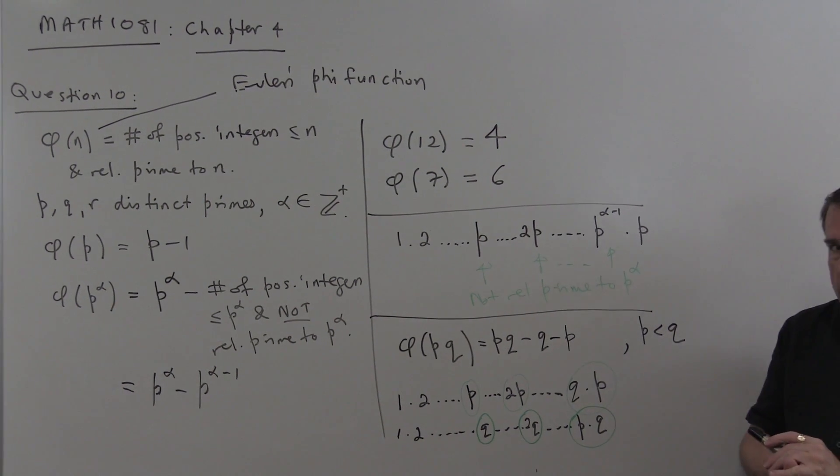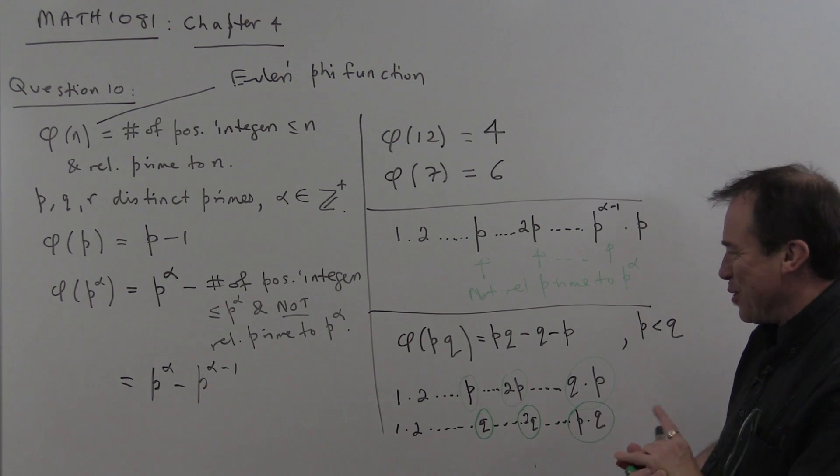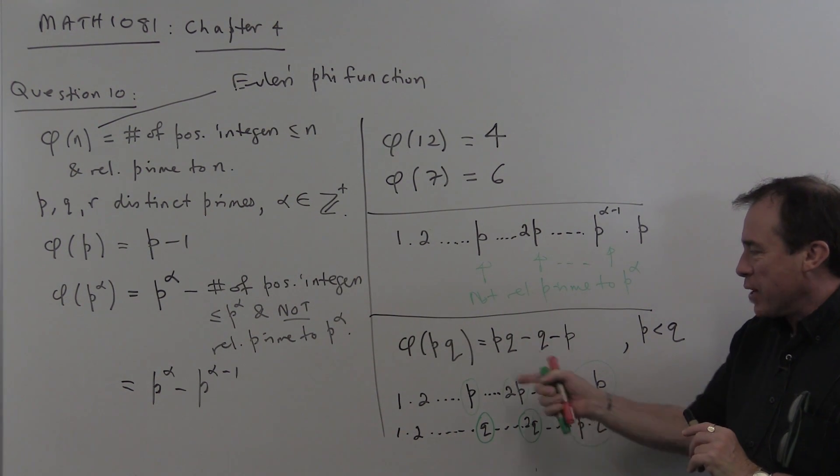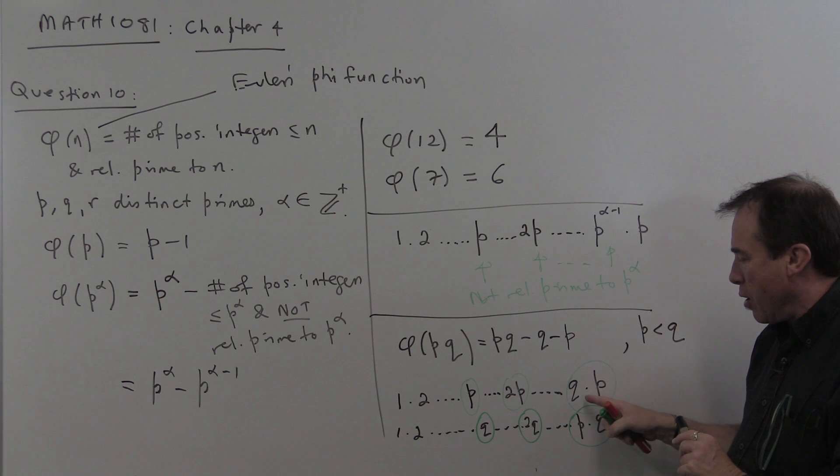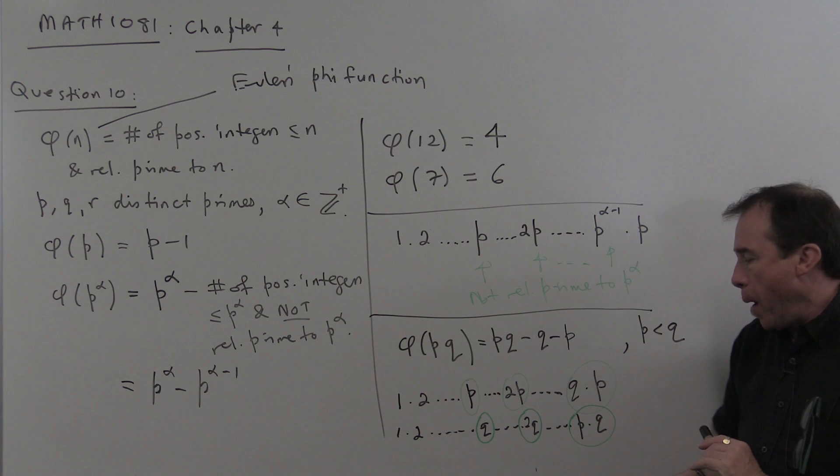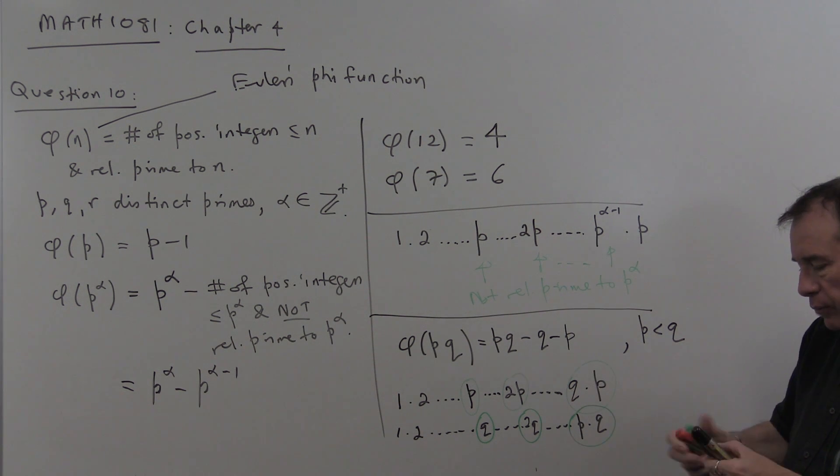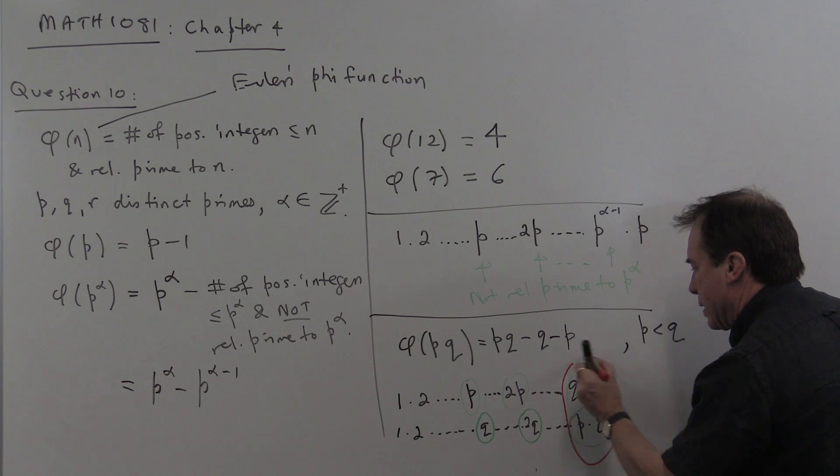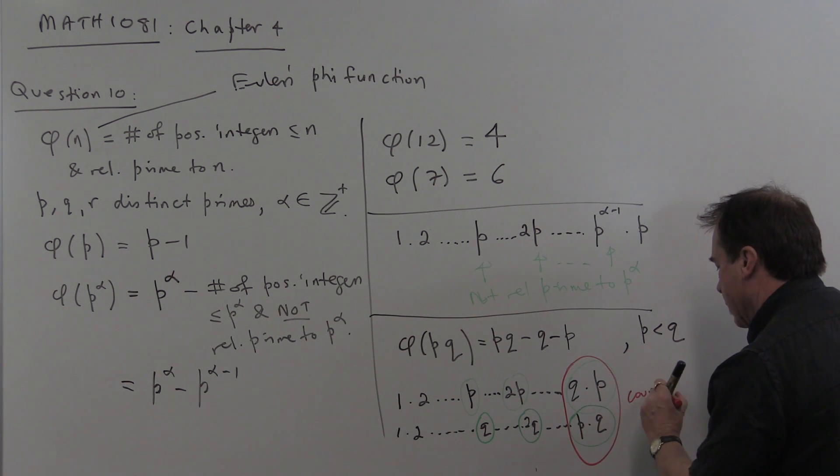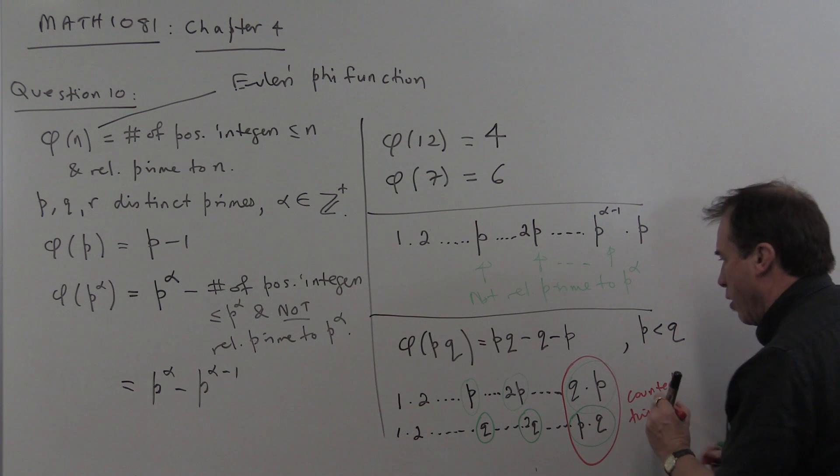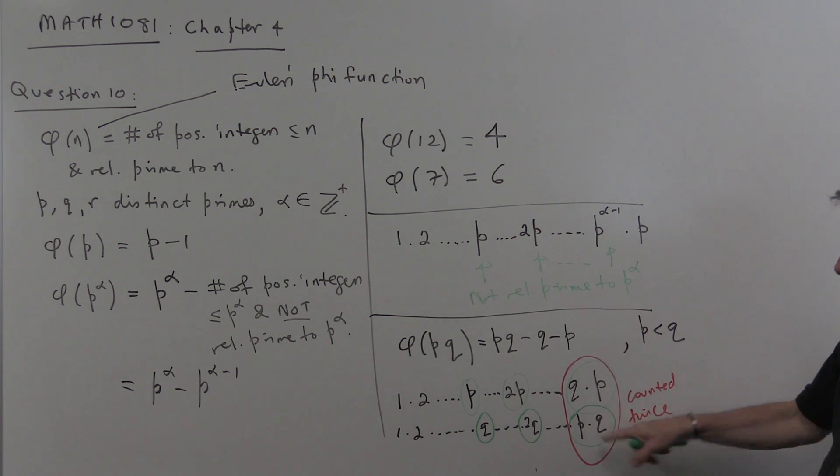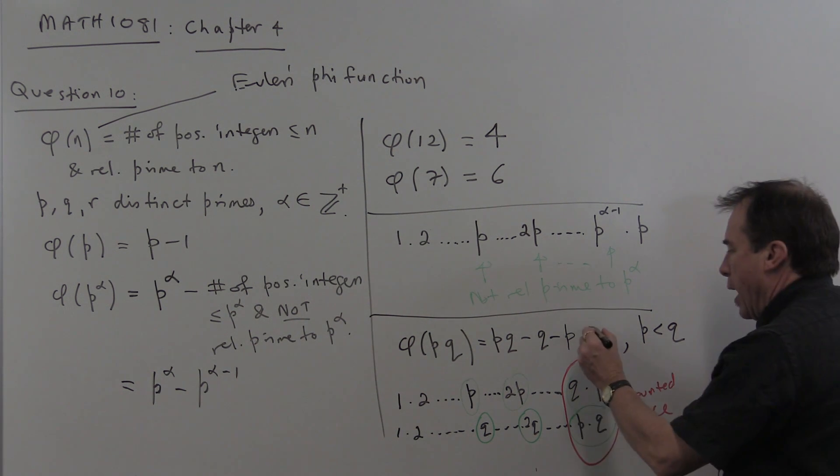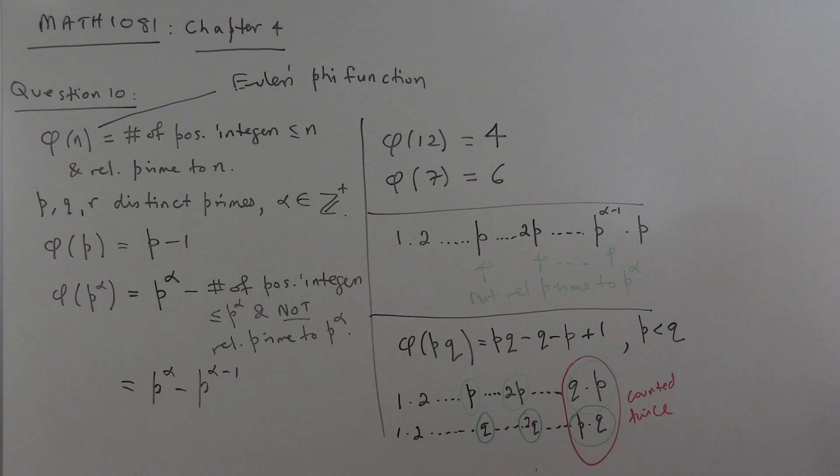And that's almost there, but you've got to be very careful, of course, with inclusion-exclusion because I've taken the total number and I've subtracted off the Q multiples of P and the P multiples of Q, but this number on the end, this one gets counted twice. This one got counted twice. I took it off once when I subtracted off that. I took it off again when I subtracted off that. So I've taken it off twice and so I'd better add 1 back in again. And so there's the correct formula for φ(PQ).